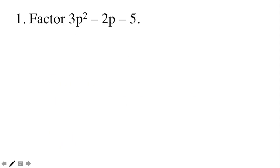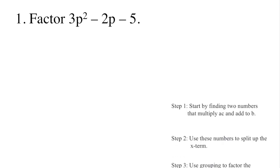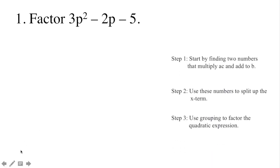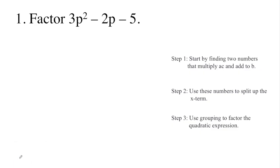Let's have the first example. Factor 3p squared minus 2p minus 5. Step 1: start by finding two numbers that multiply AC and add to B. A is the leading coefficient, B is negative 2, and C is negative 5. So let us multiply A and C, which is 3 times negative 5, equal to negative 15.